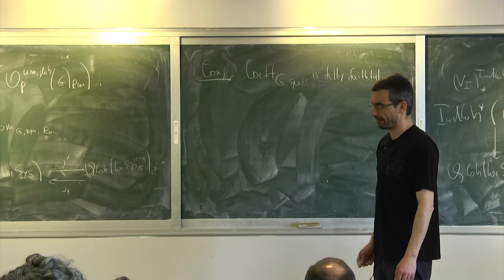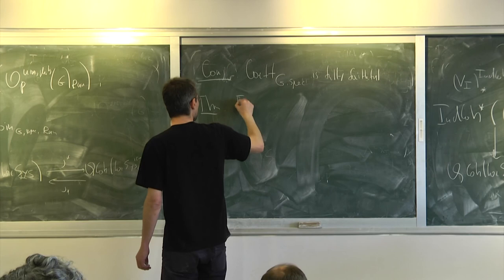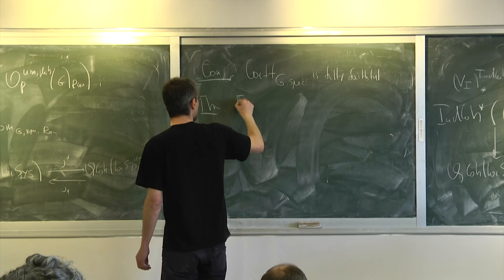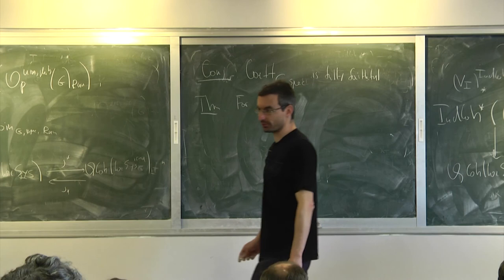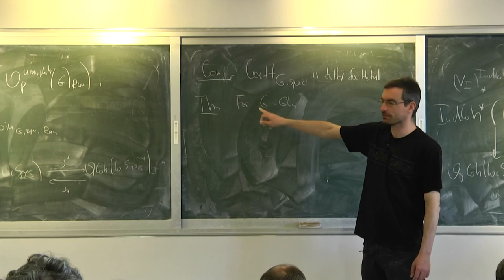This is a theorem for G equals GL_n. It's the same kind of argument as we said for Whittaker extended: Whittaker was fully faithful and the same proof, not surprisingly, works on the spectral side to prove this is fully faithful. I thought it was a theorem for all classical groups.